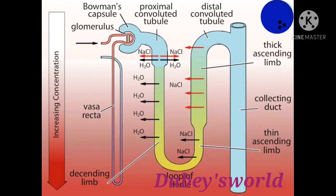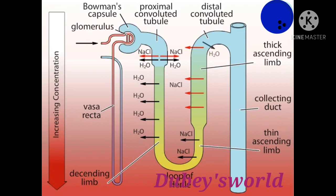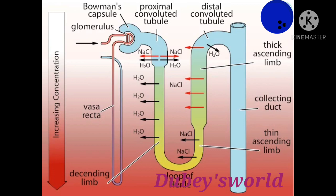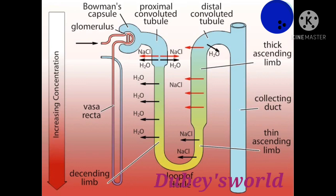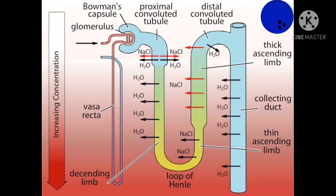Since the fluid entering the distal convoluted tubule is less concentrated than the surrounding cortex, the tubule loses water osmotically as it flows toward the collecting duct. The tubule fluid entering the collecting duct is at the same concentration as the blood plasma. However, since sodium and chloride ions have been moved out of the tubule fluid, urea and other waste products make up a greater proportion of its total solute content. As the collecting duct descends from the cortex to the tip of the renal pyramid, the concentration gradient established by the loop of Henle increases. This increasing solute concentration causes more and more water to be absorbed from the fluid, thus concentrating the urine in the collecting duct.